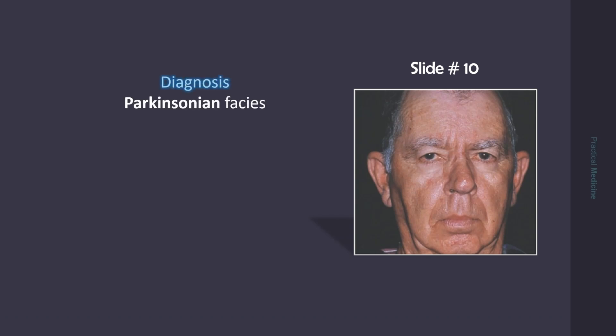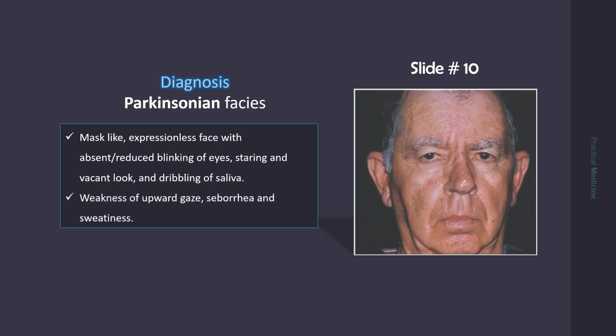Here you see parkinsonian facies. There is mask-like, expressionless face, with absent or reduced blinking of eyes. The look is staring and vacant, and in some patients, there is dribbling of saliva. Weakness of upward gaze, seborrhea, and sweatiness are some of the other features.